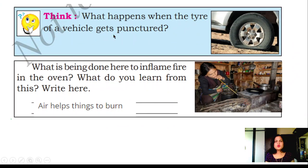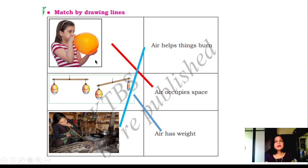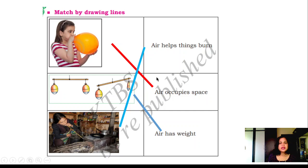What happens when a vehicle tire gets punctured? You have to refill the air in that tire. What is being done here to influence the fire in the oven? She is blowing air with a tube. Air helps things to burn — that is why she is blowing air. Match the following: air occupies space (blowing a balloon), air has weight (experiment), and air helps things burn.